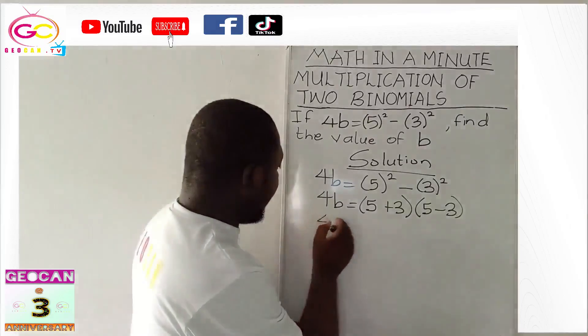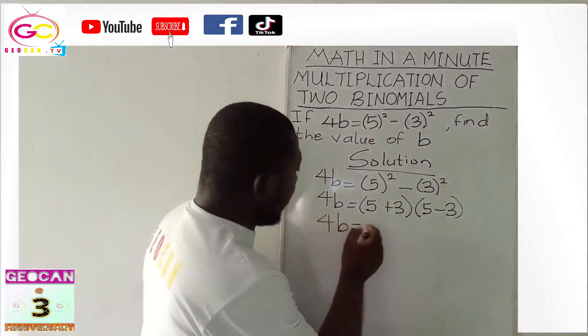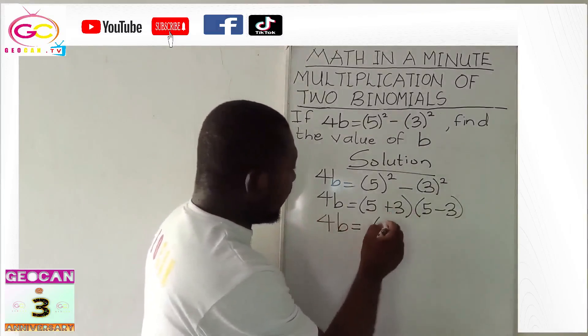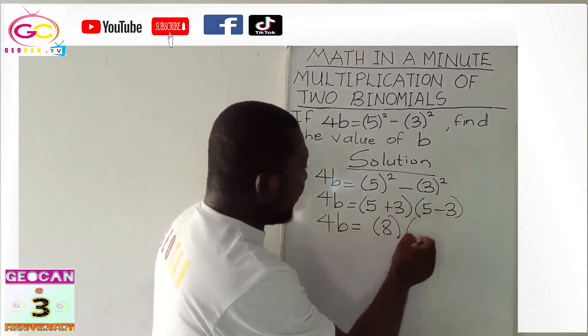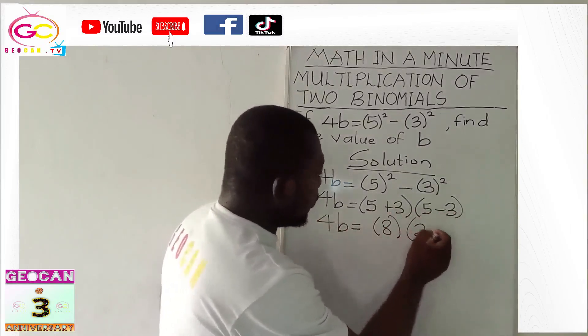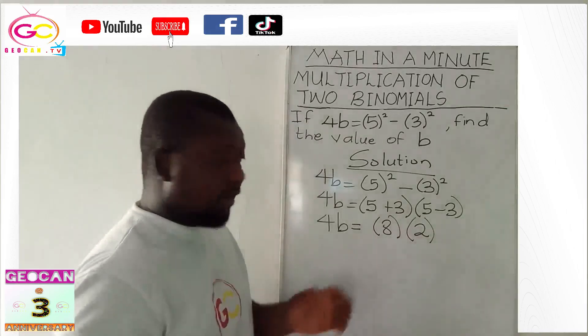So, you have 4b will be equal now. That 5 plus 3 will give us 8. Now, 5 minus 3 will give us 2. Let's continue.